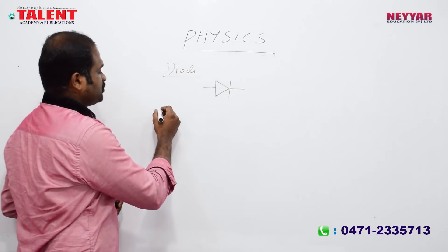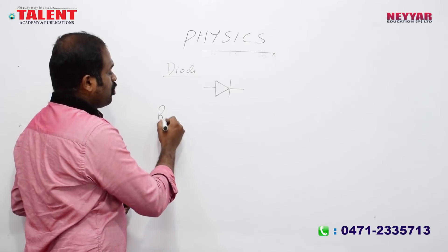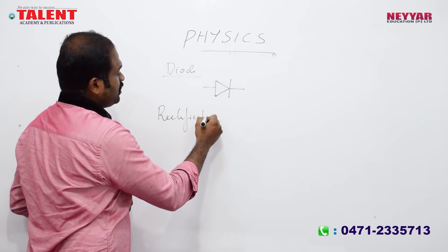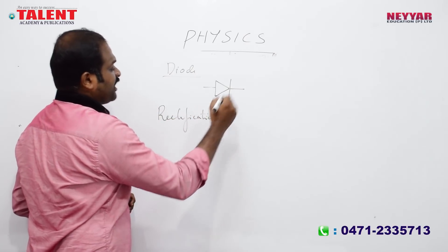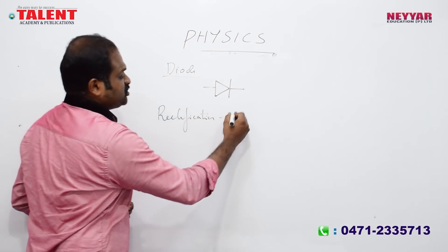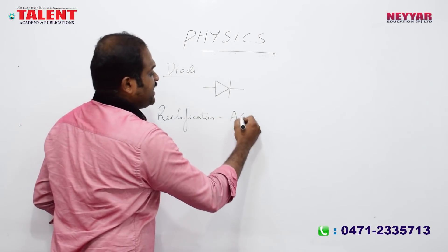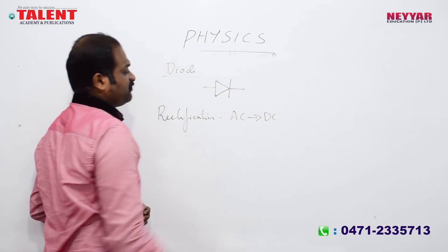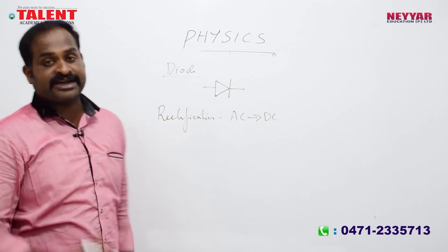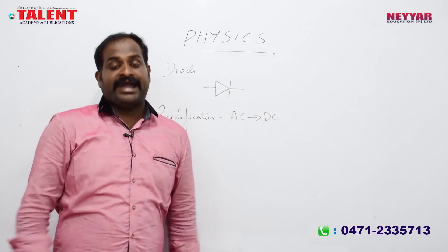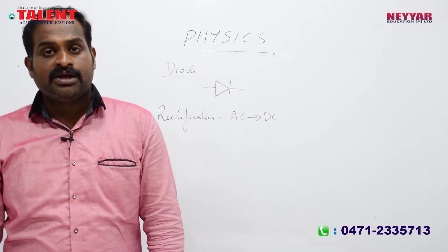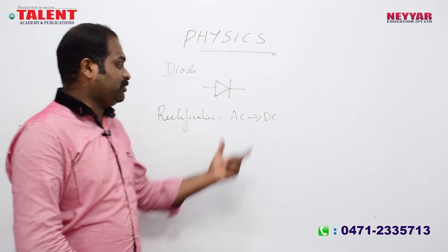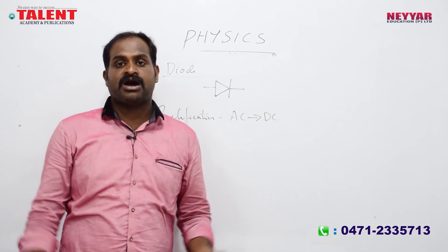The ordinary diode is used for rectification. What is rectification? AC is converted to DC. AC is alternating current — the direction of current alternates. DC is direct current — the direction does not change.